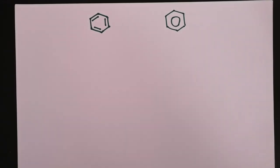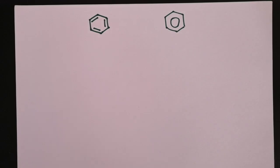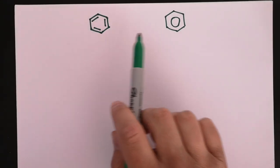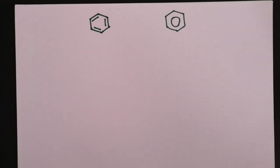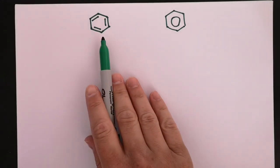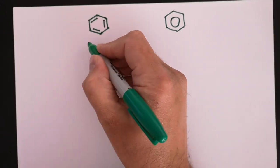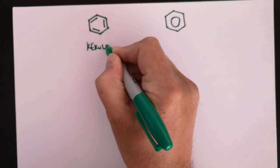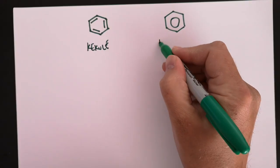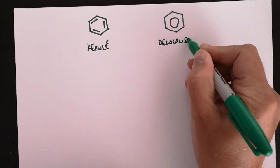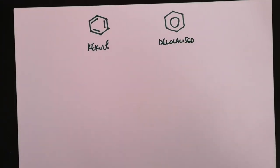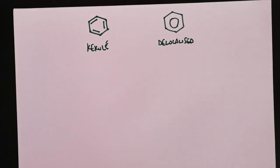Hi, this is Dr. S and this is video four of my module on aromatic chemistry for OCR A-level year 13. At the end of the last video I looked at these two structures and said that they actually both represent the same compound - both representations of benzene. This one appears to be an aliphatic alicyclic version, and this one appears to be aromatic. This is called the Kekulé model of benzene and this is the delocalized model of benzene.